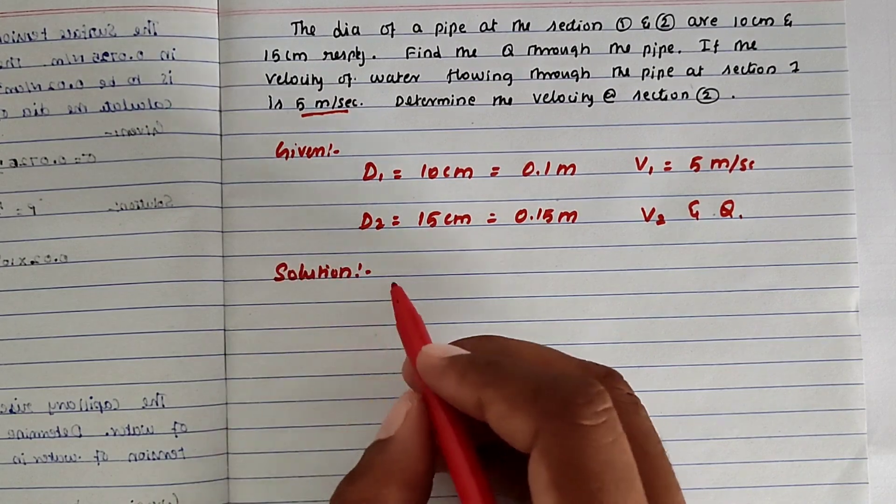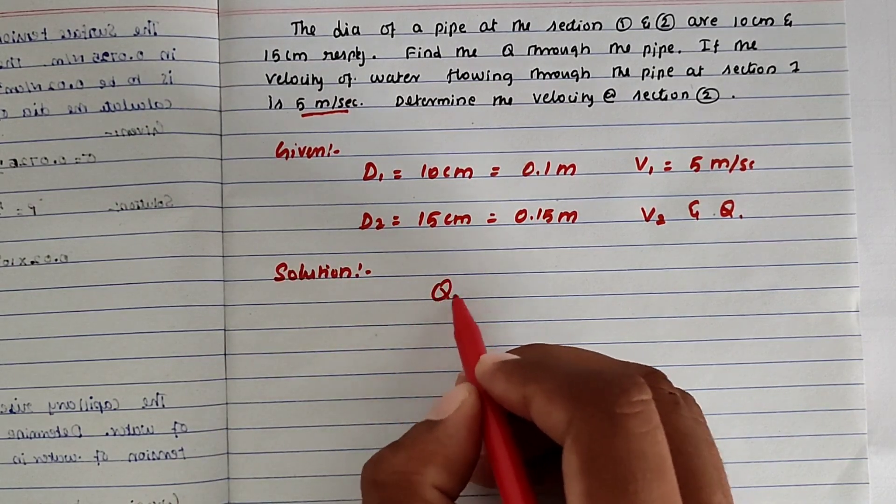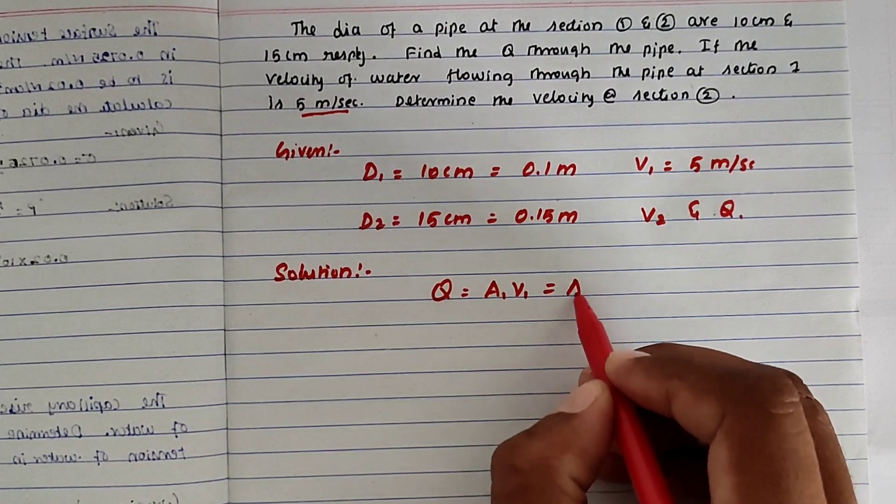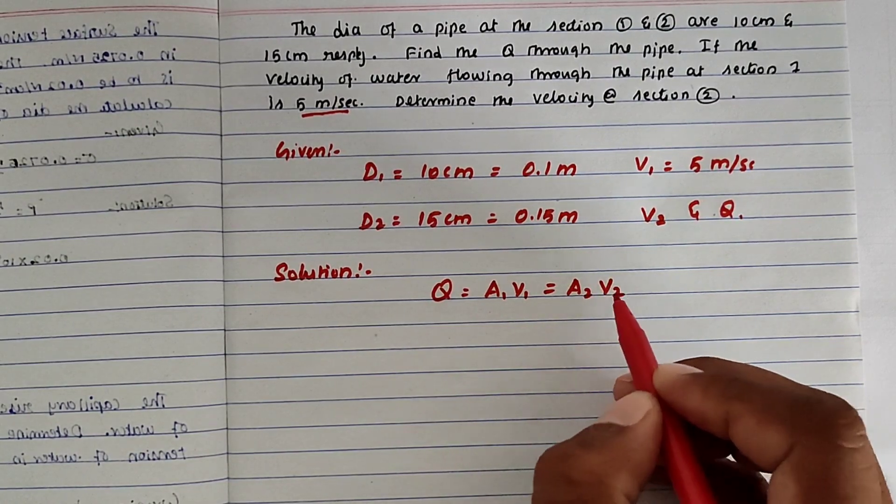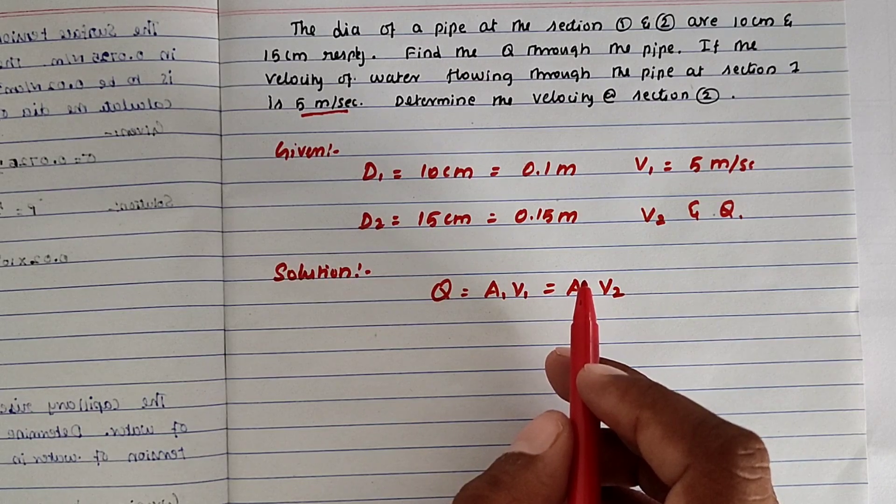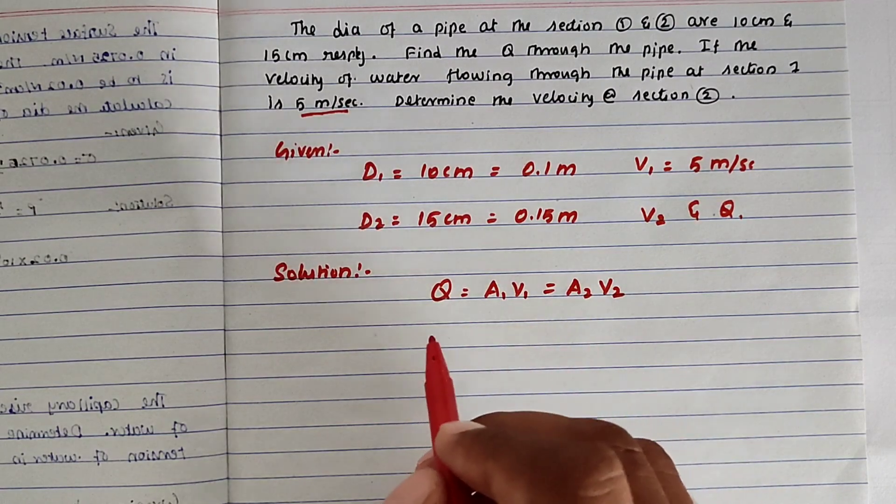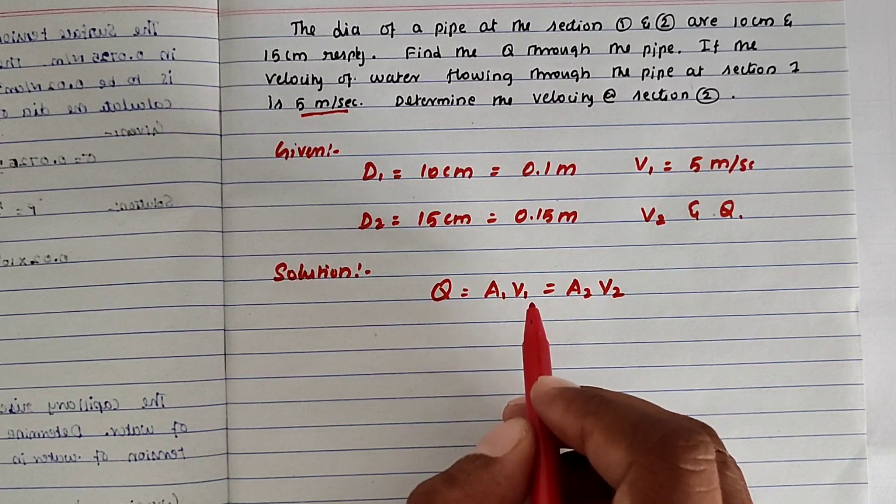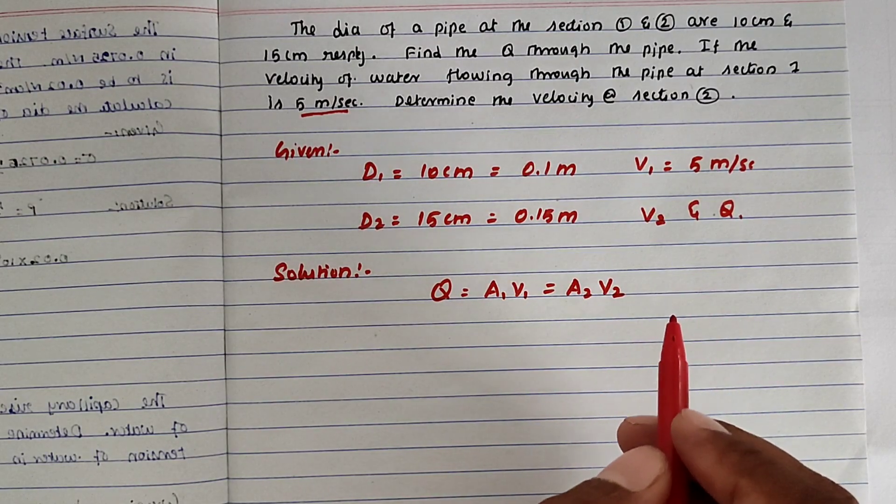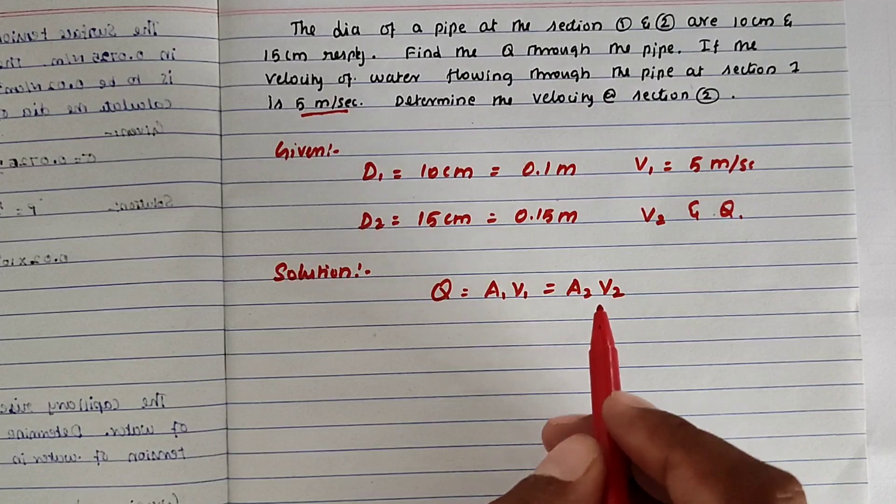Now the solution. We know the continuity equation: Q equals A1V1 equals A2V2. This equation is based on the principle of conservation of mass. Area into velocity of one channel and area into velocity of another channel equal to the total discharge.